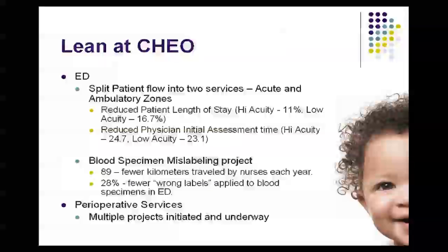We did a split in patient flow, basically creating two patient lines — one for the acute zone and one for an ambulatory zone. As a result of that effort, we've had significant improvements in length of stay — reductions of 11 percent and 16 percent for both high and low acuity patients. We've also seen a significant improvement in initial assessment time for physicians. When we split the flow, focusing on segregating low acuity, it had a positive impact on high acuity as well — a pretty classic Lean experience.